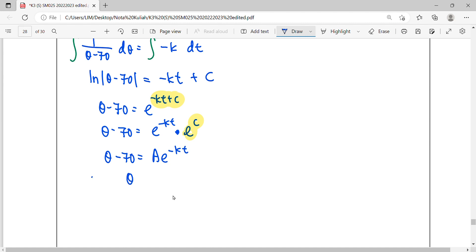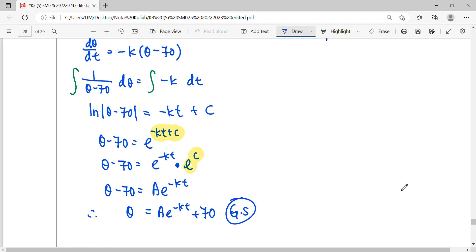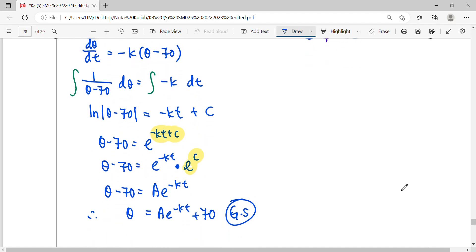The general solution is θ = Ae^(-kt) + 70. Look at the constants you need to find using the information: A and K, because theta and T are your variables. Using your story timeline, substitute the values.